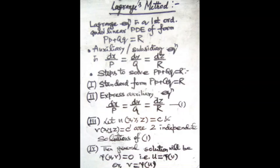Here, φ(u, v) = 0 means u is a function of v, or v is a function of u. We can write either u = ψ(v) or v = ψ(u). This is the basic methodology to solve any Lagrange equation, and this method is known as the Lagrange method.